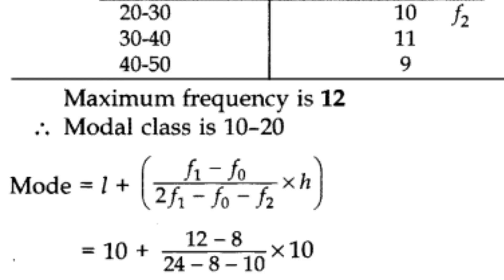l here stands for lower class limit. In this case, we have taken 10 to 20 as f1, and 10 is the lower class limit.